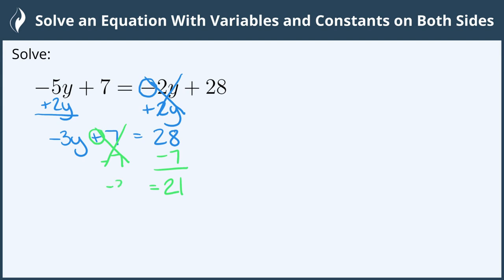We're left with negative 3y on the left hand side, and now we only have one more step. To isolate the variable, we look for all the operations. This is multiplication. The opposite to negate that will be to divide by negative 3 on both sides.